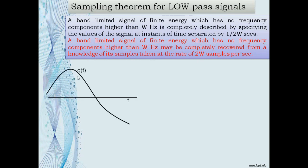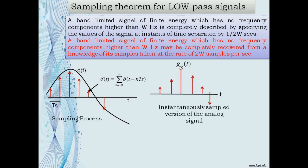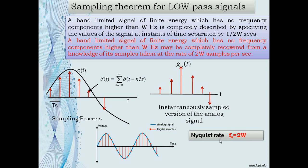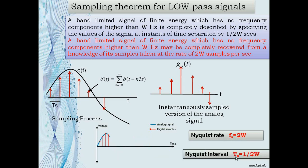Consider a continuous signal G(t) sampled with time instances separated by Ts seconds. The impulse train used is δ(t) = Σ (n = −∞ to ∞) δ(t − nTs). The sampled output G_δ(t) is the instantaneously sampled version of the analog signal. The sampling is done at the rate equal to 2W, which is called the Nyquist rate, and the interval Ts = 1/(2W) is called the Nyquist interval.